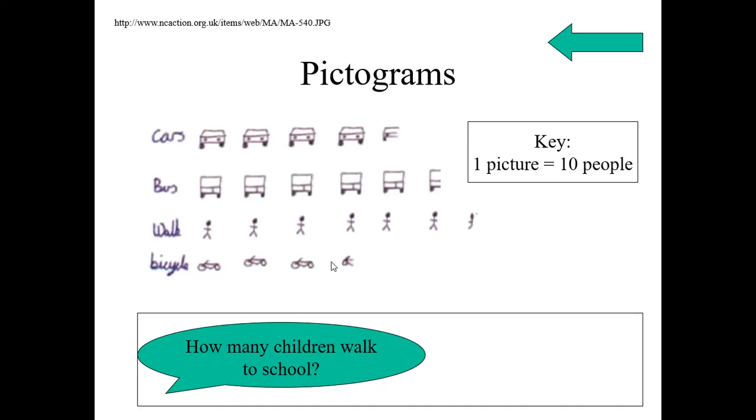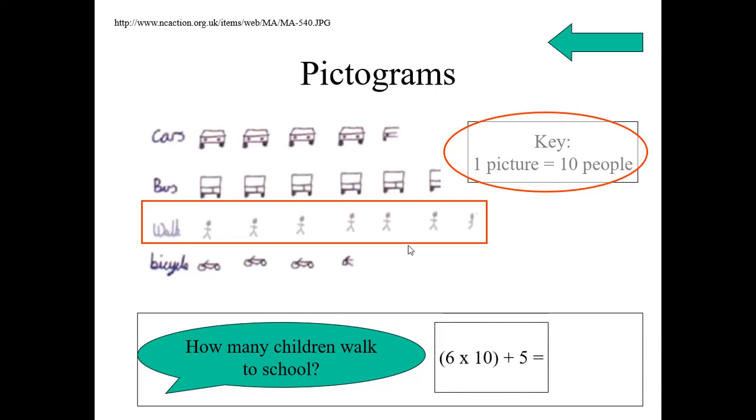How many children walk to school? Let us count. A walk. How many children? 1, 2, 3, 4, 5, 6. Each picture carries 10 people. And half. Half indicates 5 people. Now, count how many 10s are here? Total 6. How many half? 5 here. Then what will be the answer? There are 6 into 10 plus 5. That is 65.